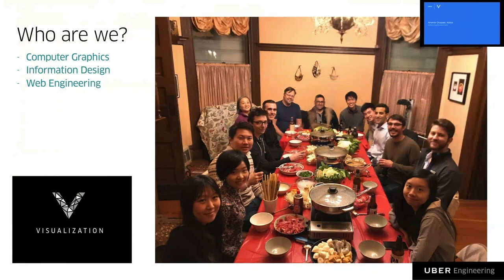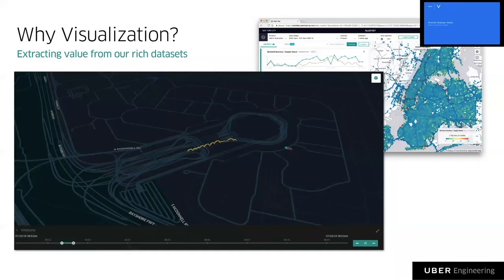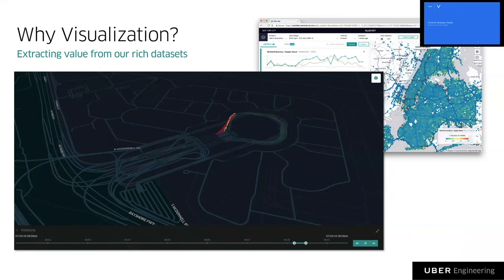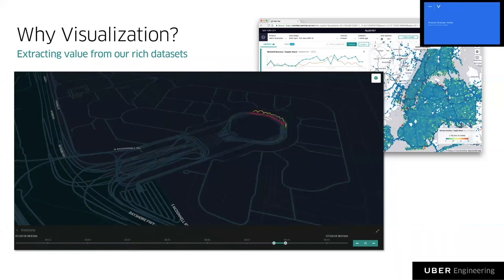Our skill set is around computer graphics, information design, and web engineering. Why a visualization team at Uber? Having a visualization team is fairly unique today. We spend lots of resources processing and storing billions of data points every day at Uber. And visualization is a way to actually get insights and value from this data — to mine this data in order to get some value from it.